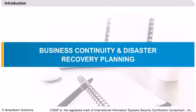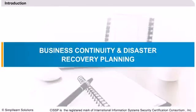While the other domains are concerned with preventing risks and protecting the infrastructure against attack, this domain assumes that the worst has happened. The BCP and DRP domain addresses the preparation, processes, and practices required to ensure the preservation of the business in the face of major disruptions to normal business operations. BCP and DRP involve the identification, selection, implementation, testing, and updating of processes and specific actions necessary to prudently protect critical business processes from the effects of major system and network disruptions, and to ensure the timely restoration of business operations when significant disruptions occur.